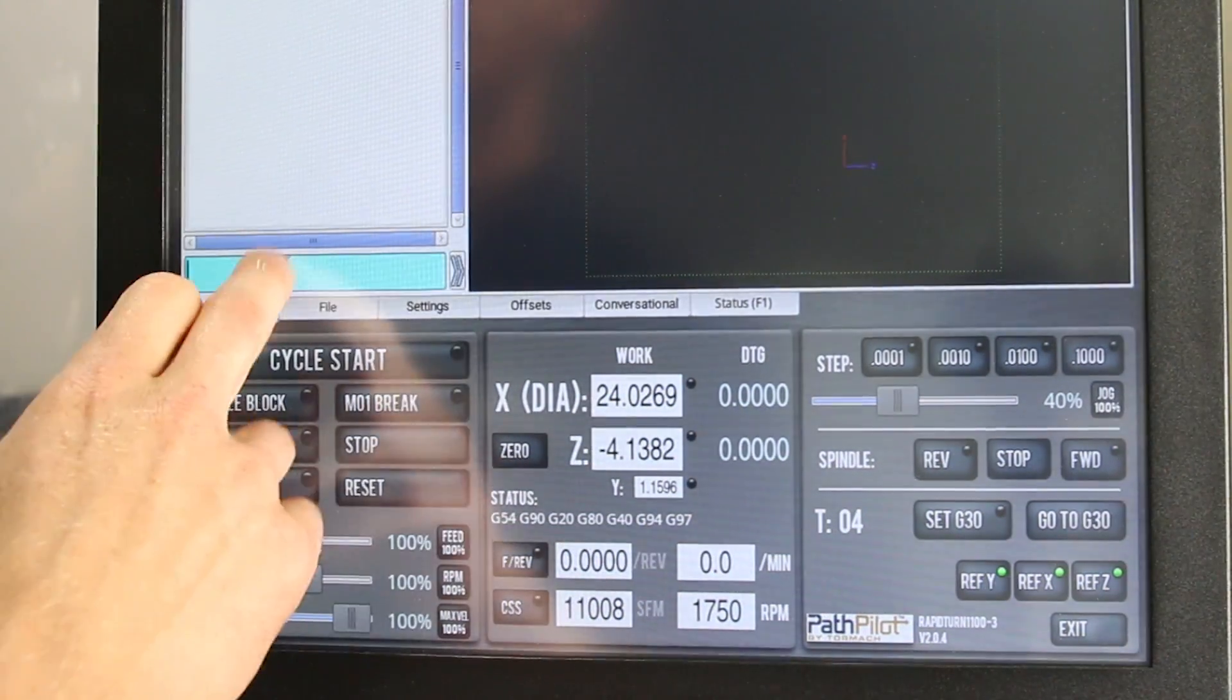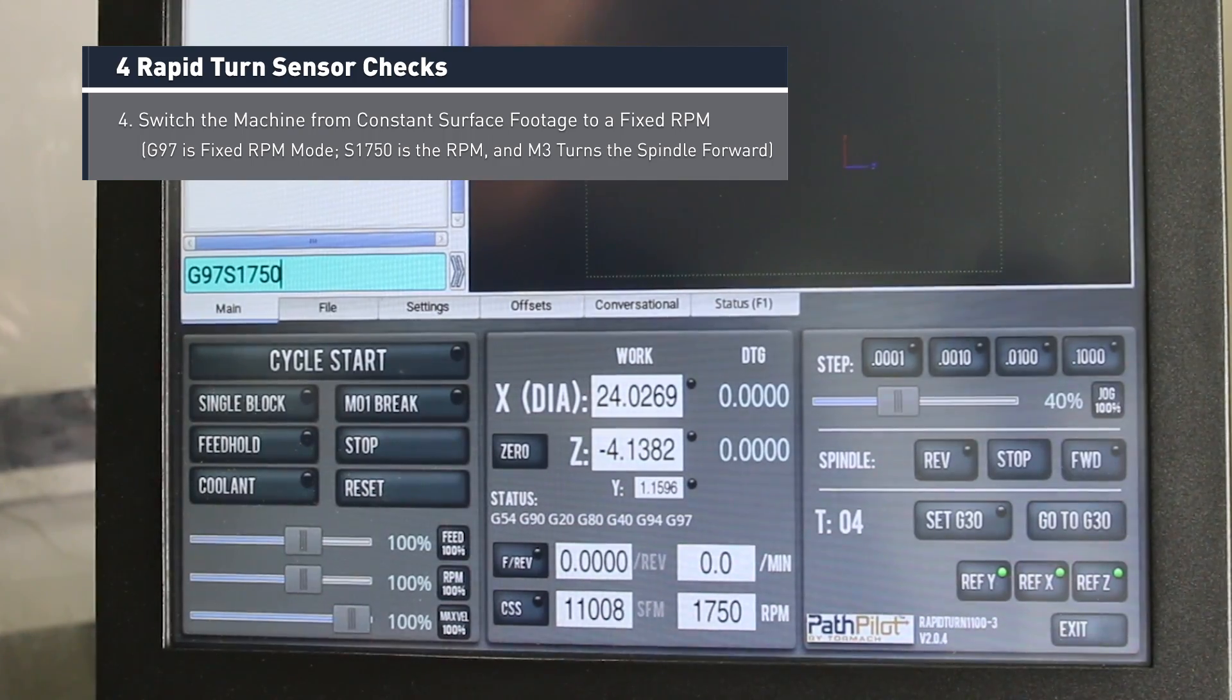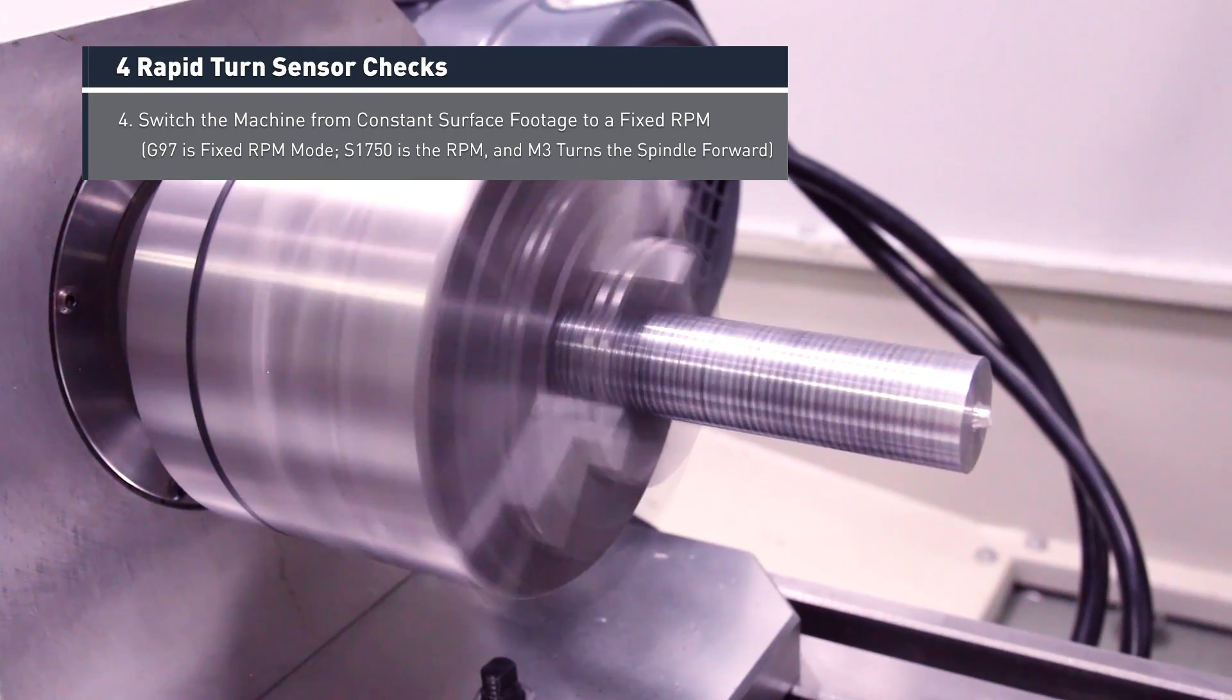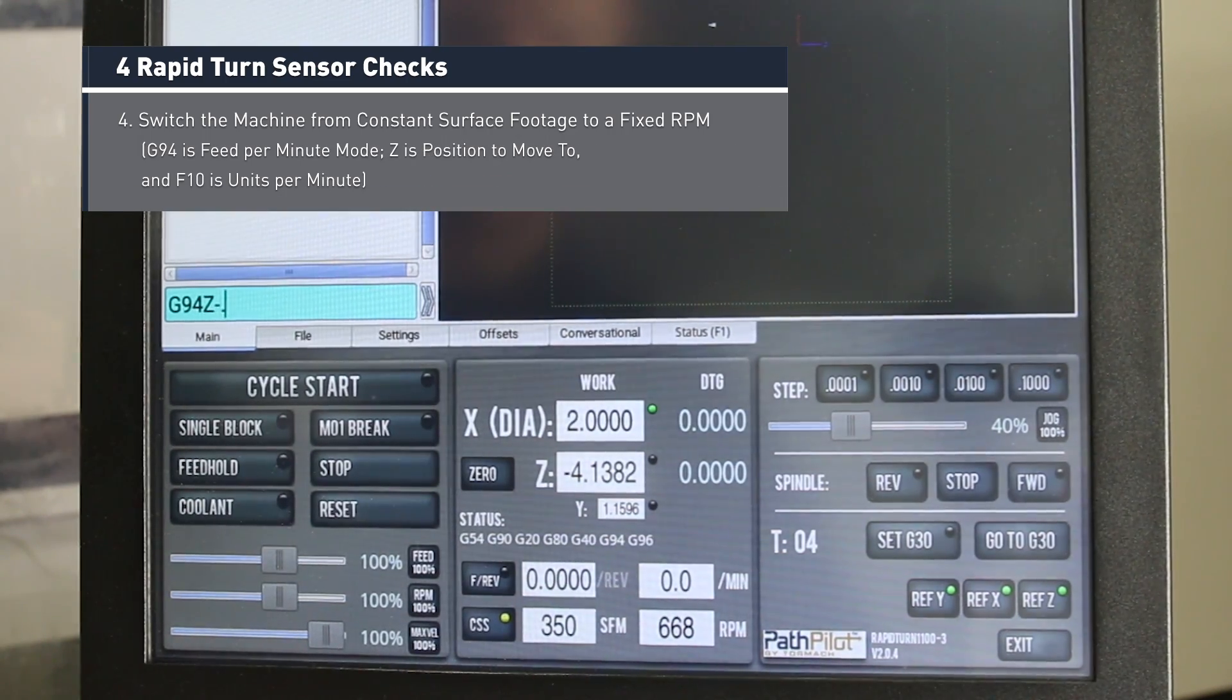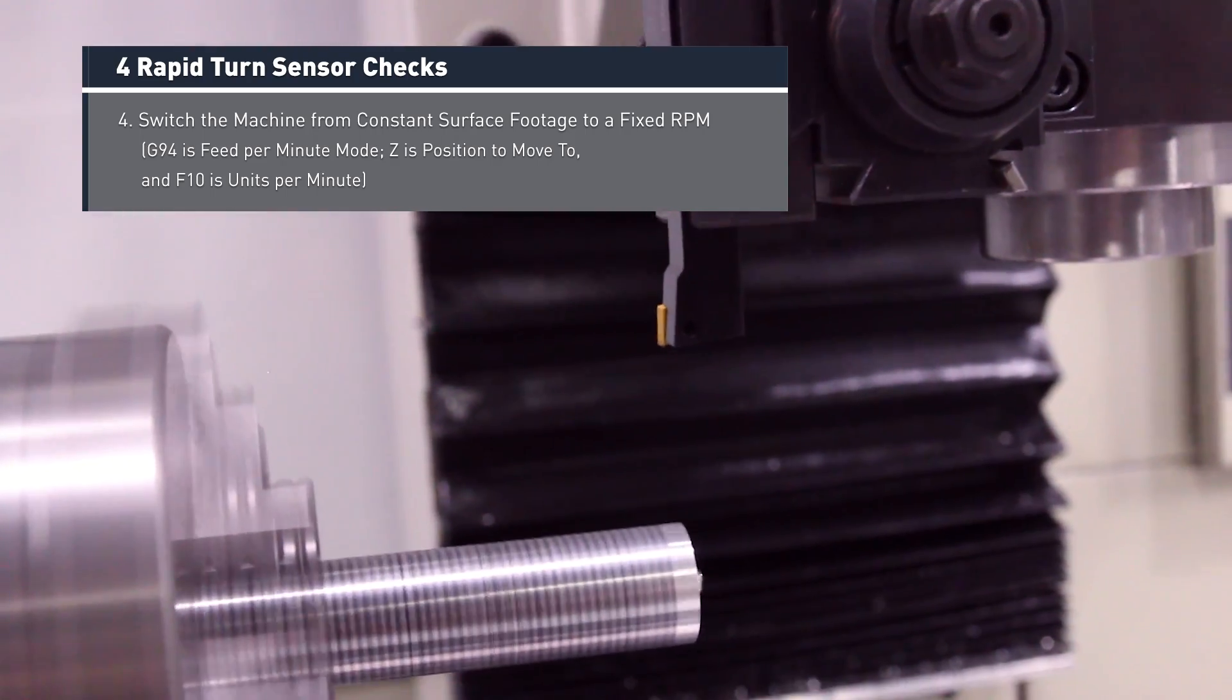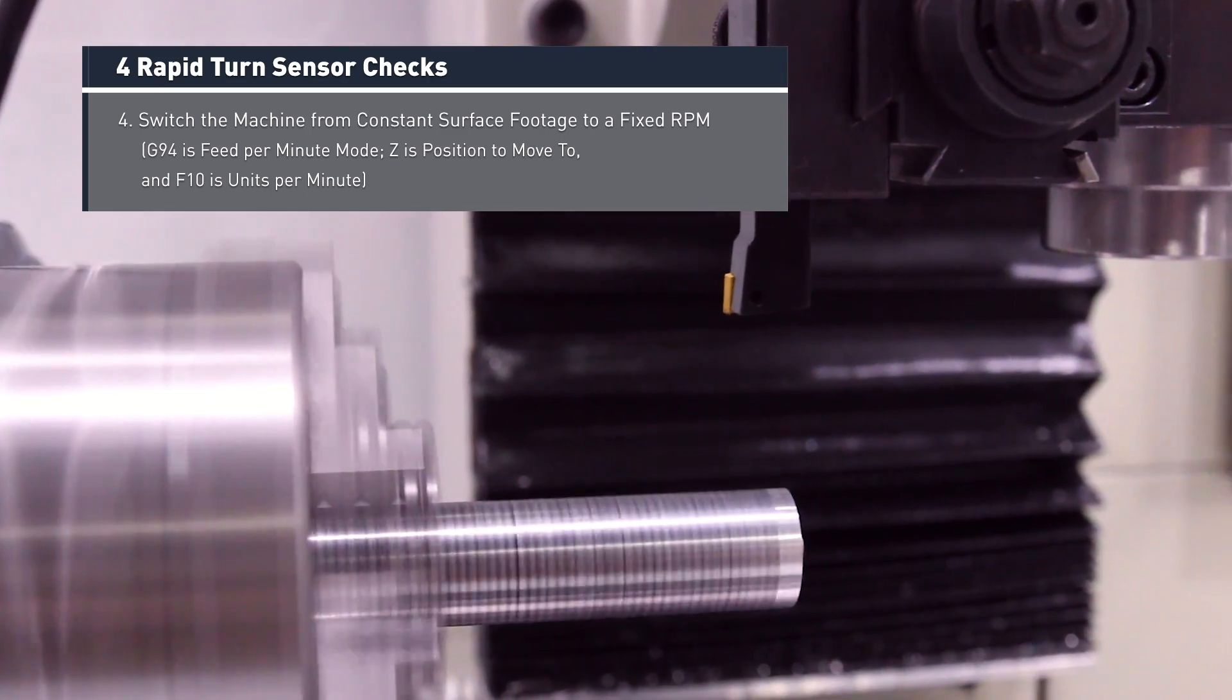Another test that we can perform is to switch the machine from constant surface footage to a fixed RPM. We'll switch it into G97 mode which lets the machine run at a constant spindle speed, and then we can run it in a feed per minute mode which is G94. If we switch the machine to run in constant RPM and feed per minute mode and everything functions as normal, then we know that we've isolated this problem down to the sensor itself.